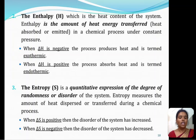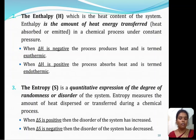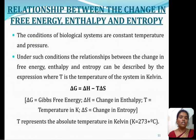Entropy is a quantitative expression of the degree of randomness or disorder of a system. Entropy measures the amount of heat dispersed or transferred during a chemical process. When delta S is positive, the disorder of the system has increased. When delta S is negative, the disorder of the system has decreased. We will now see about the relationship between the change in free energy, enthalpy, and entropy.